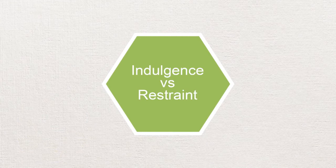Indulgence versus restraint is related to the gratification versus control of basic human desires related to enjoying life. Indulgence stands for a society that allows relatively free gratification of basic and natural human drives related to enjoying life and having fun. Restraint stands for a society that suppresses gratification of needs and regulates it by means of strict social norms. Here are the differences between indulgence and restraint provided by Hofstede.